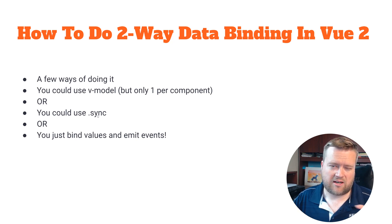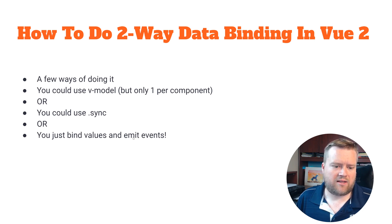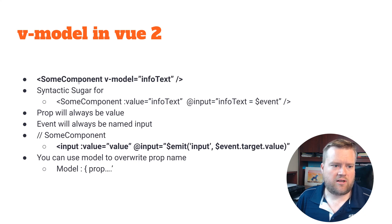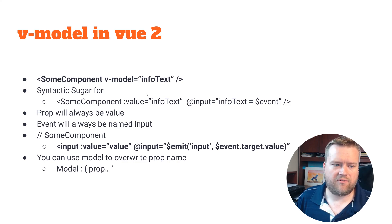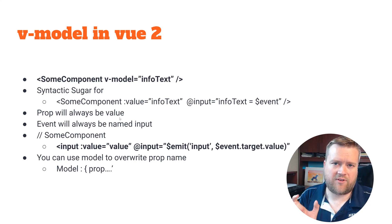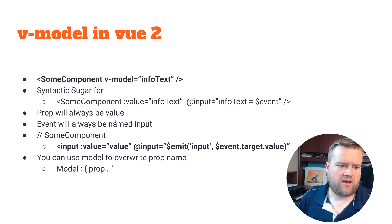Another option in Vue 2 was dot sync, which allows you to do the same thing as V model but for multiple values. When using V model on a component in Vue 2, the prop is always called 'value' and the event is always named 'input'. So inside your child component you'd have this.value, emit input, event.target.value. You can use the model option to overwrite prop names — the at-input is the event name inside the child component.